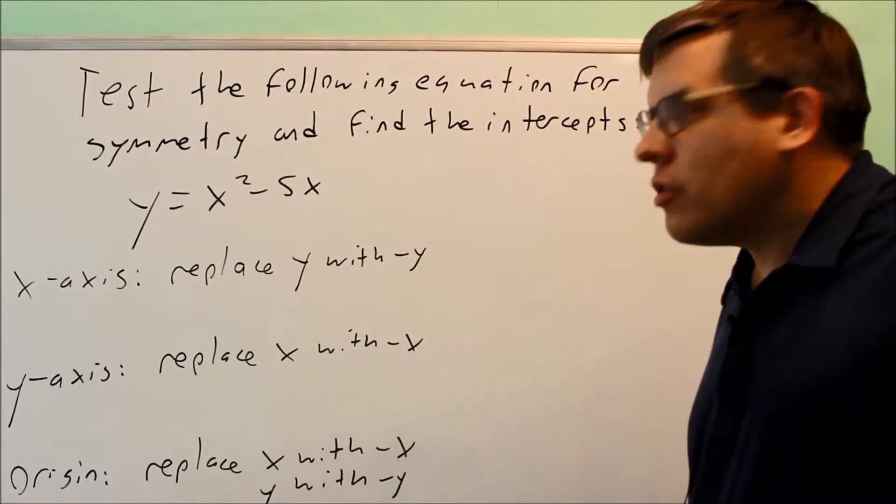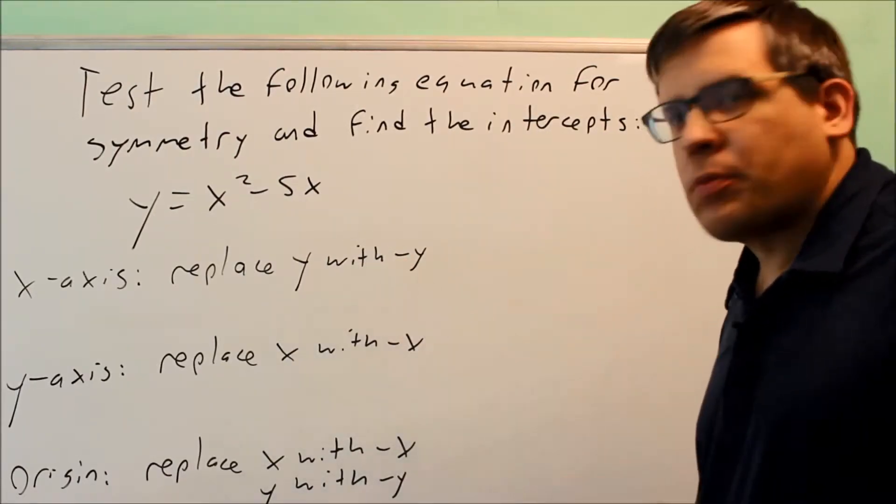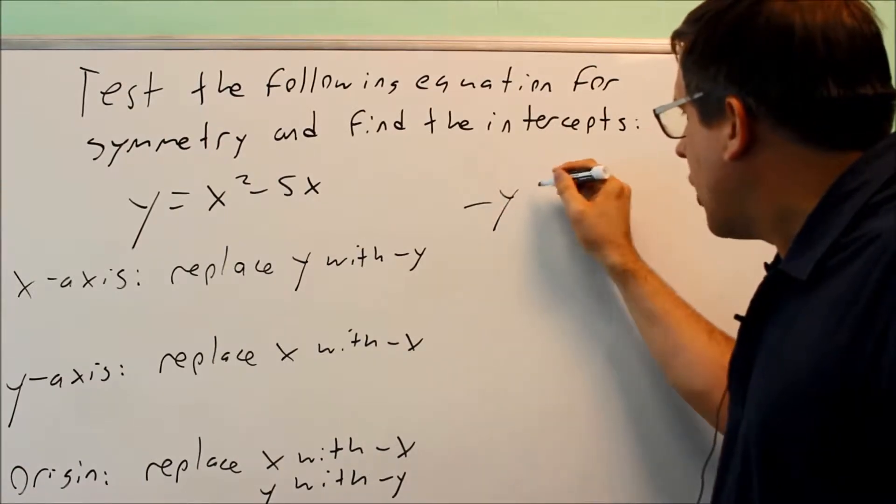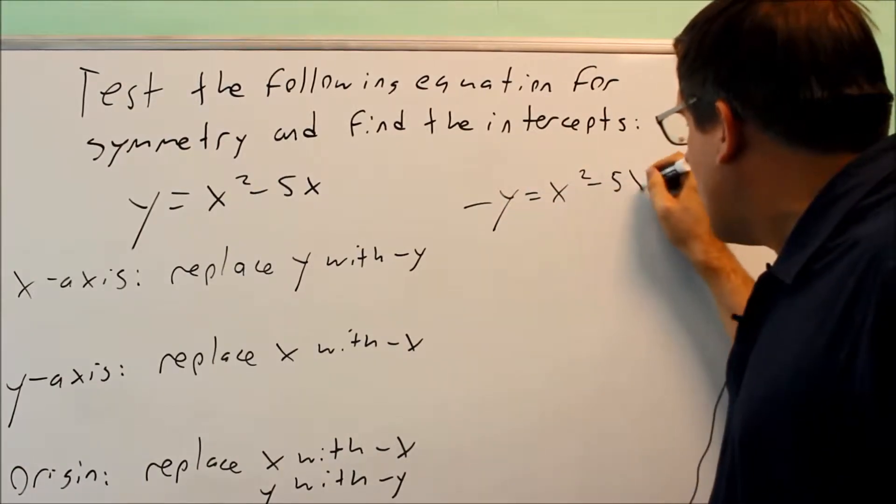For x-axis symmetry, we replace y with -y. So we substitute and get -y = x² - 5x.